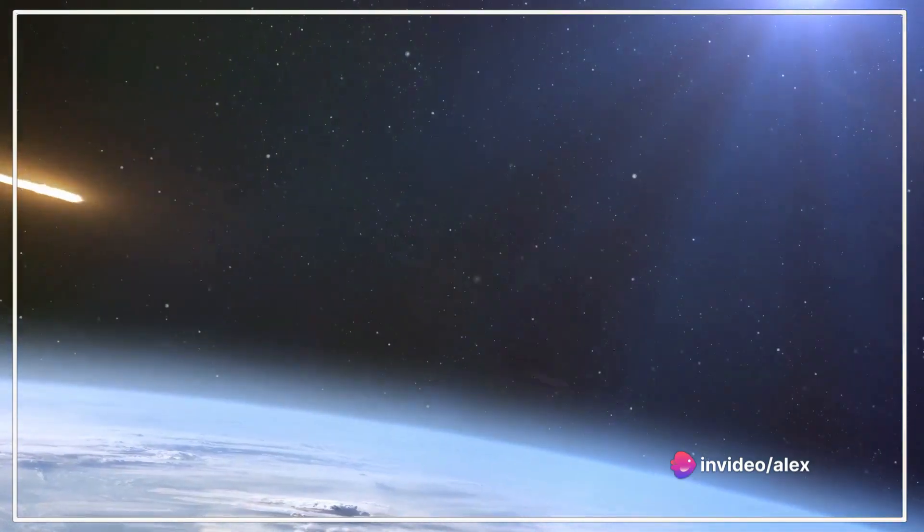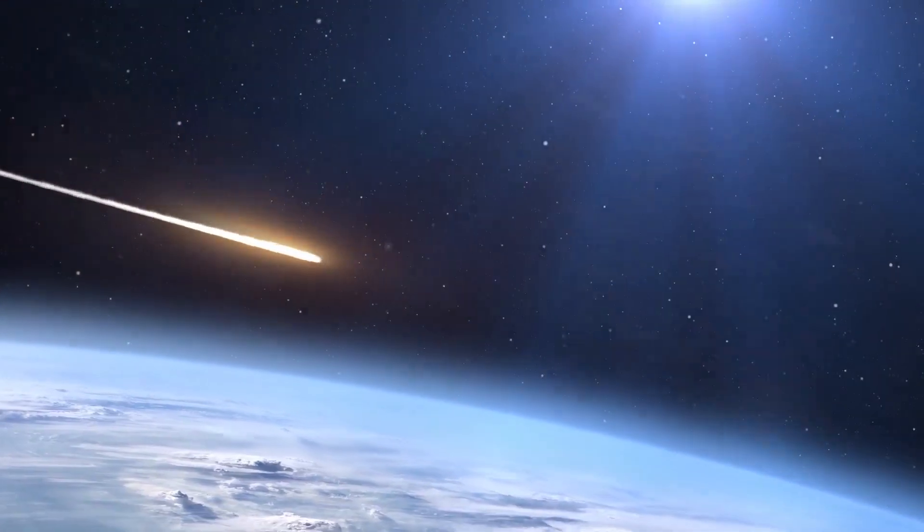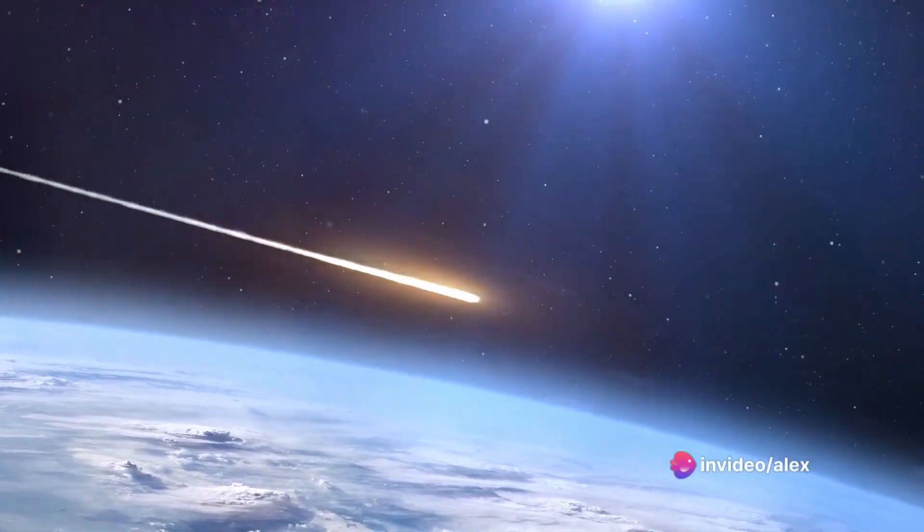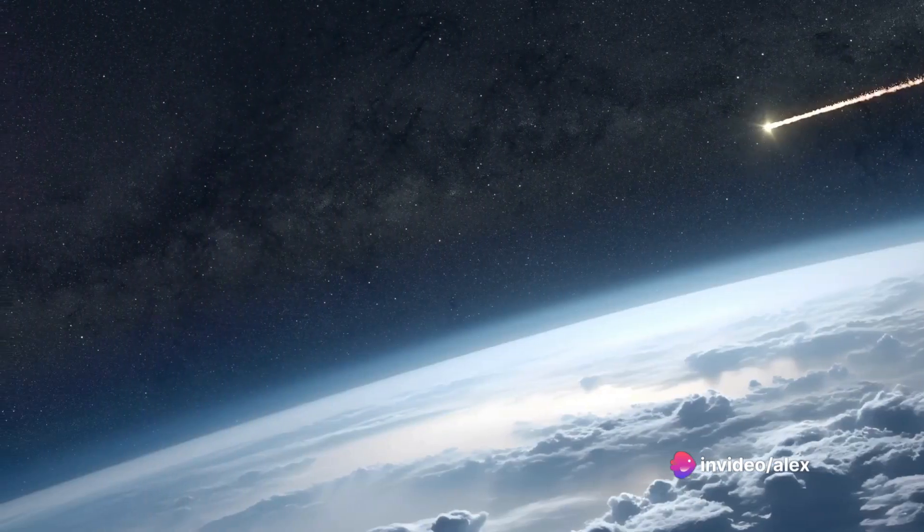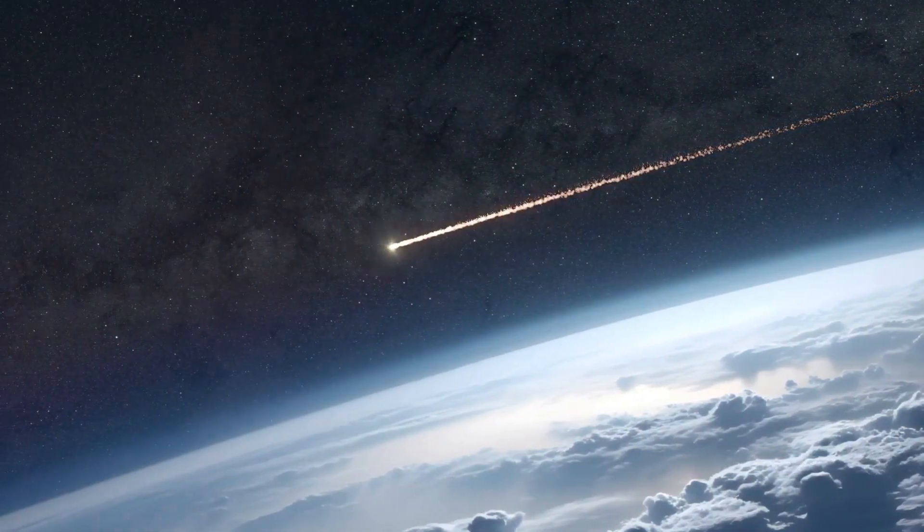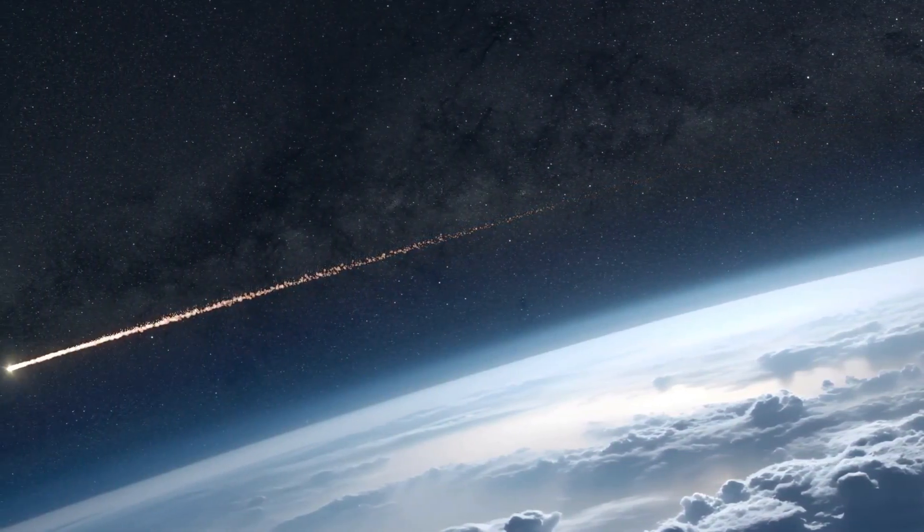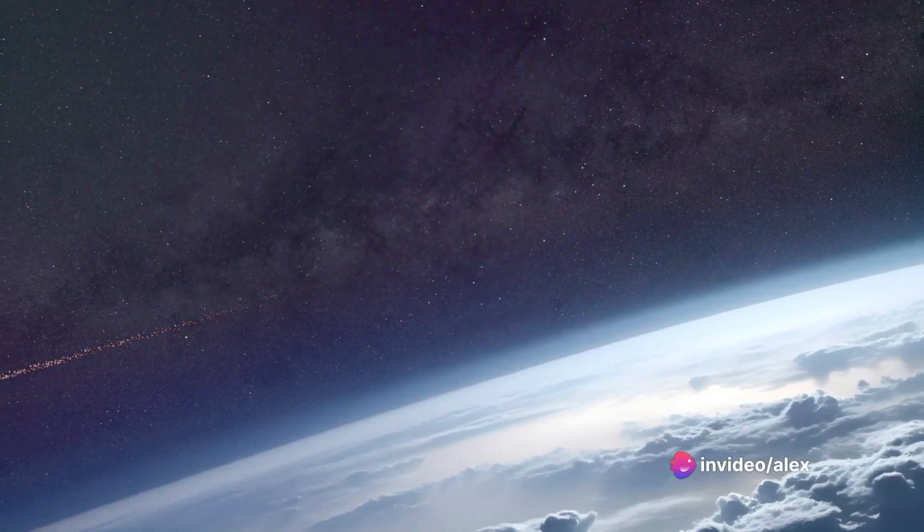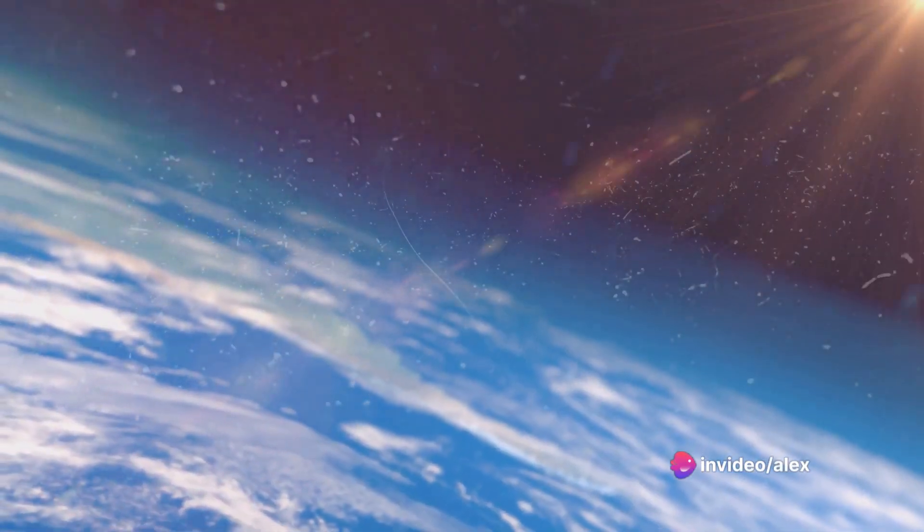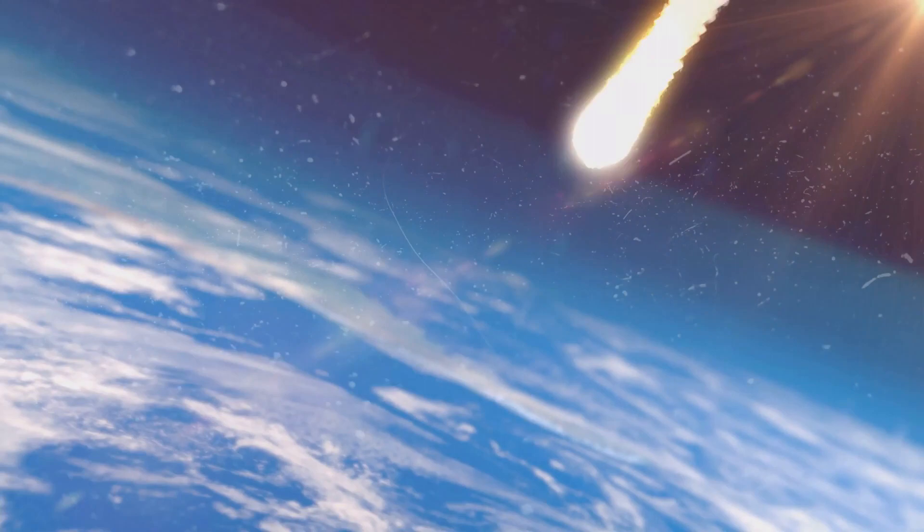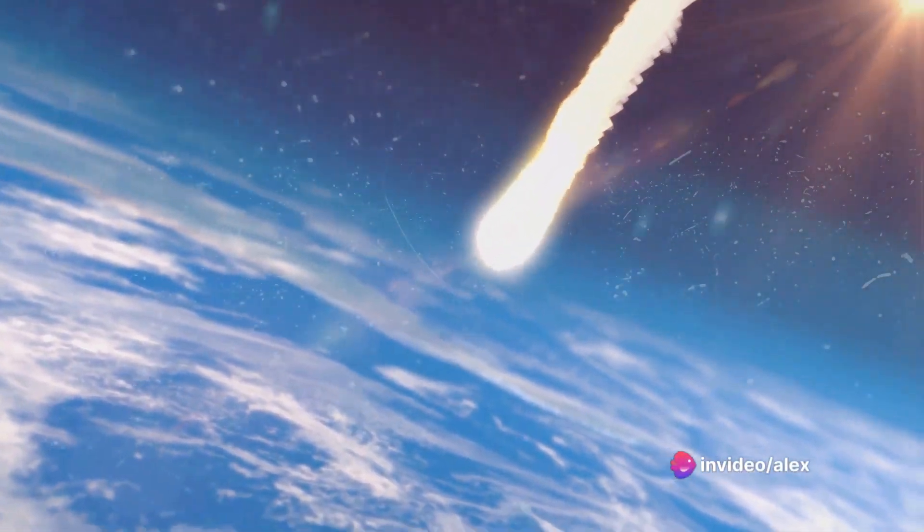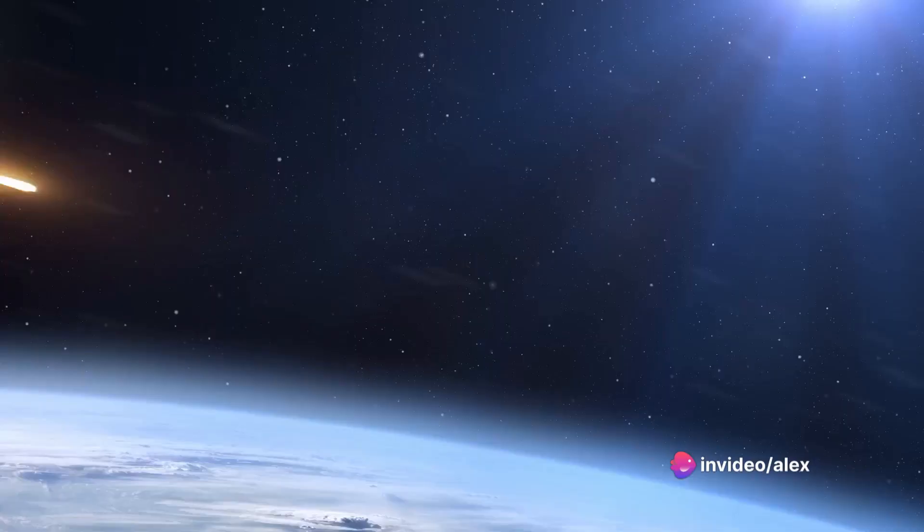Let's take another example, the Tunguska event, which occurred in 1908, when a meteor exploded over Siberia. The explosion released energy equivalent to approximately 15 million tons of TNT, flattening an estimated 80 million trees over an area of 2,000 square kilometers. Our one-pound asteroid would unleash an energy more than 300 times that of the Tunguska event.